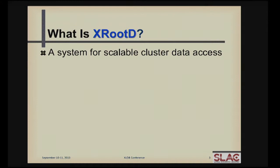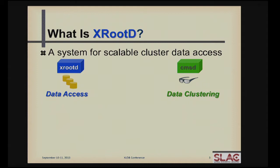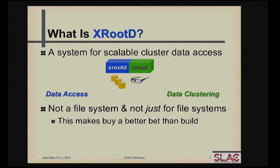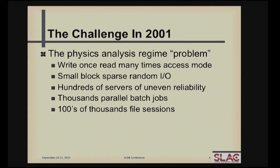So what is XRootD? It's a system for scalable cluster data access. We have two components: a data access component called XRootD, and a clustering component called CMSD. You can use those separately because they're two separate services, but most people put them together and are able to cluster their data. The important thing to remember: this is not a file system — we avoided the file system wars. But it's also not just for file systems, which makes it quite usable in different contexts.